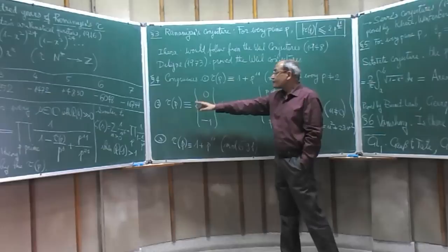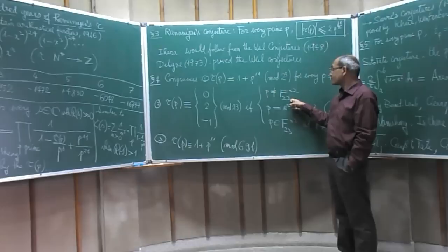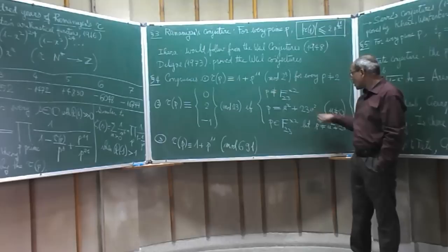Tau of p is congruent to 0, 2 or minus 1 modulo 23 depending upon whether p is not a square modulo 23 or whether p is of this form u squared plus 23 v squared or if p is a square modulo 23 but not of this form.